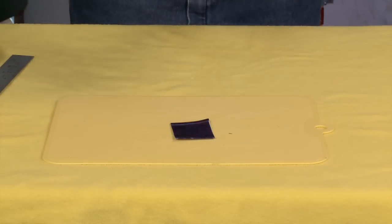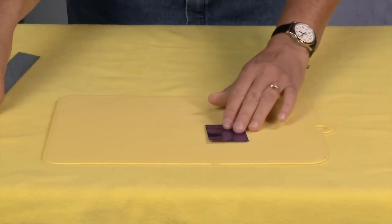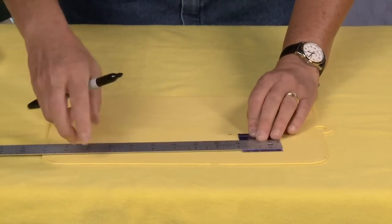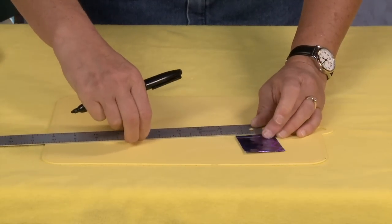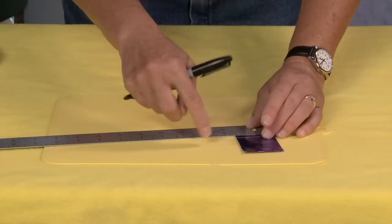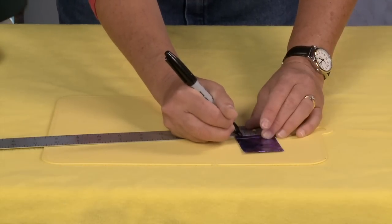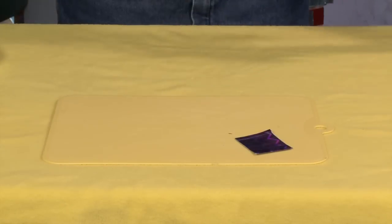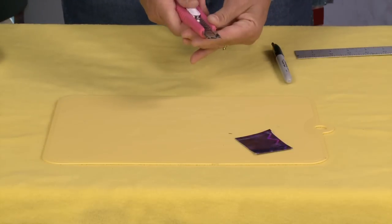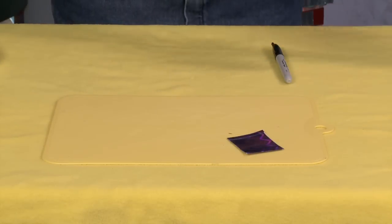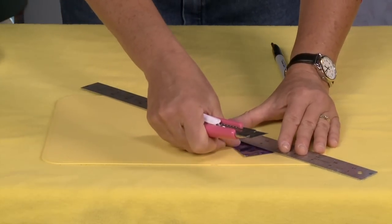Now with a sharpie pen, you want to just measure in a half an inch at the top and a half an inch from the opposite side on the bottom. And then you're gonna take your exacto knife or a pair of scissors, it's up to you, and cut between those two lines.